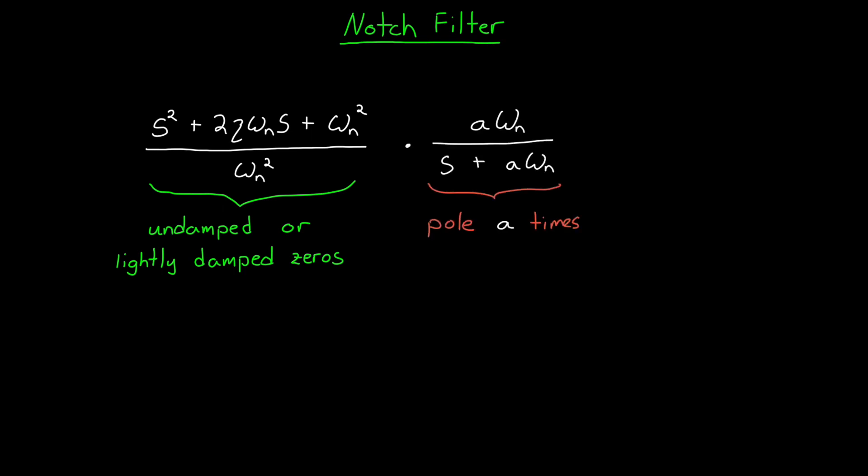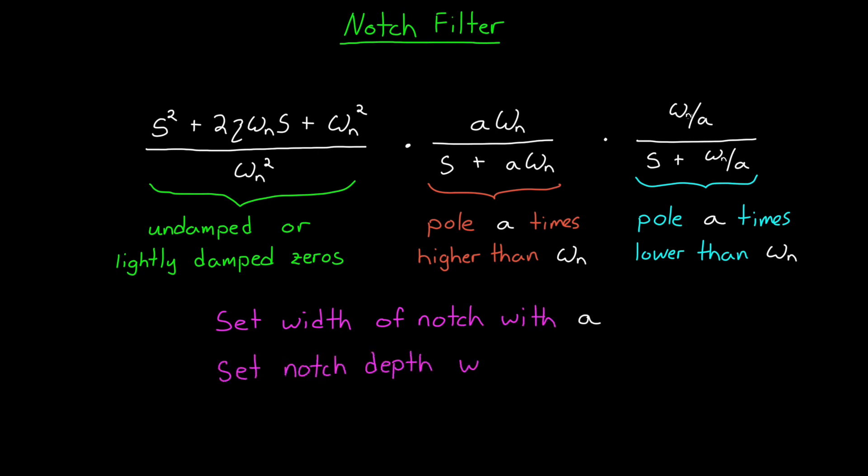Then we add two poles to make the system realizable. And importantly, it gives us control over the width of the notch. So we can set the width by adjusting a, we can set the depth with zeta, and we can move the notch around by adjusting omega n.